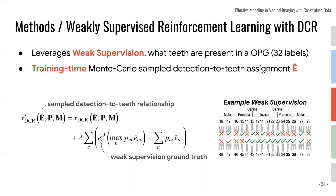If the annotation is different from the segmentation, what exactly is the annotation? The annotation we're providing is 32 zeros or ones, denoting whether the teeth are present. So instead of having to sit down drawing circles, dentists only have to check 32 boxes.